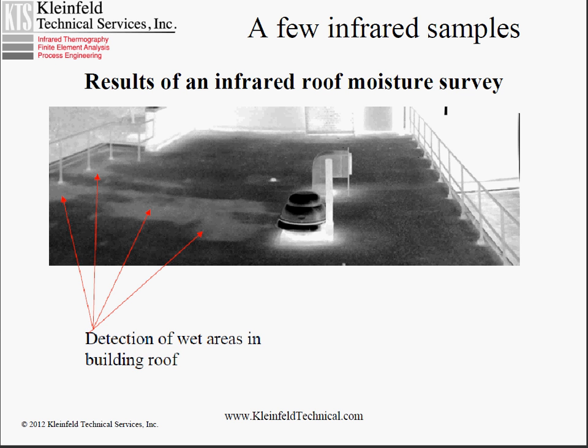This is the result of an infrared roof moisture survey looking for water in the roof. In the hands of a properly trained or experienced infrared thermographer, infrared can be used to detect wet areas in a building roof. The brighter areas marked with the red arrows are warmer than the rest of the roof, and this is indicative of water in the roof under its surface.